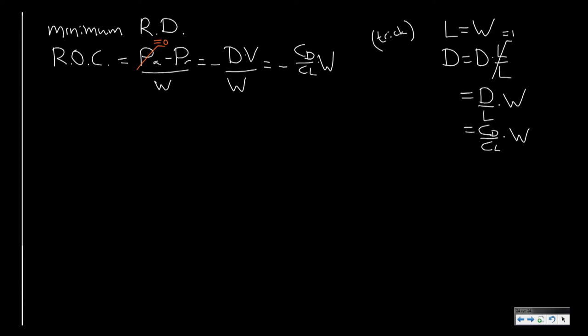But let's have a second look at our lift is equal to weight equation. Lift is of course CL times half rho V squared S, which equals the weight. So the airspeed is in fact the square root of weight over S times 2 over rho and 1 over CL.